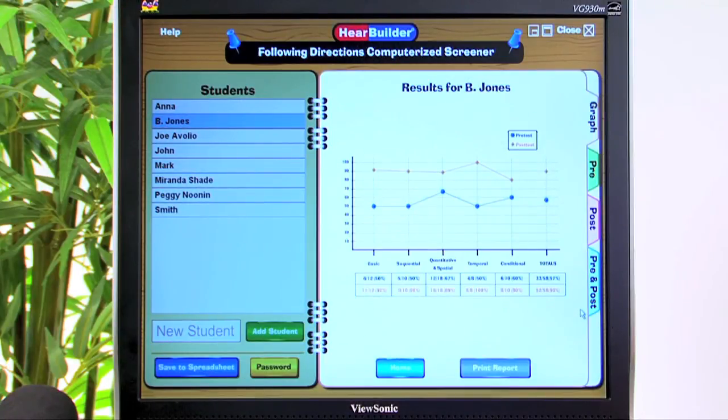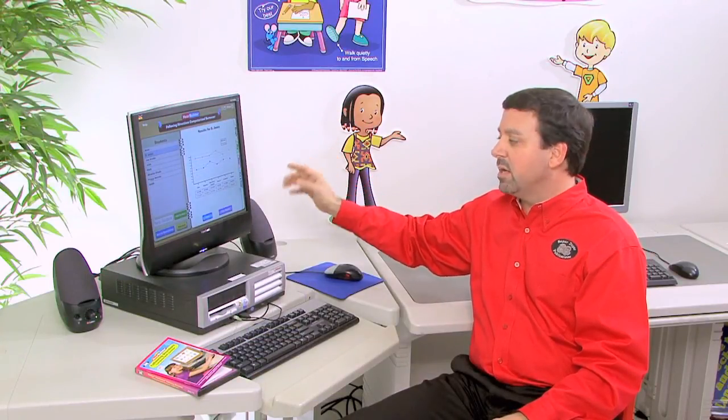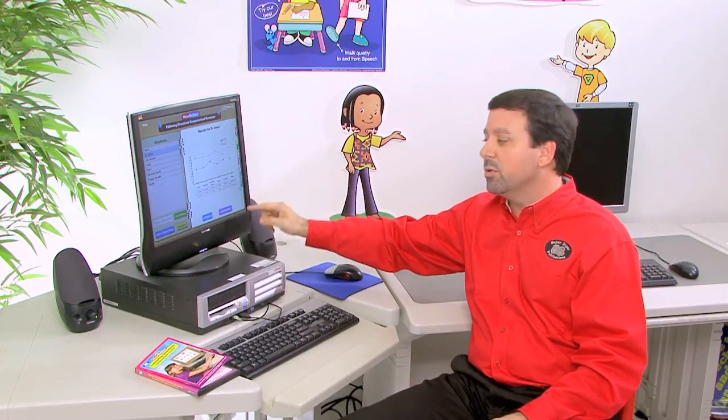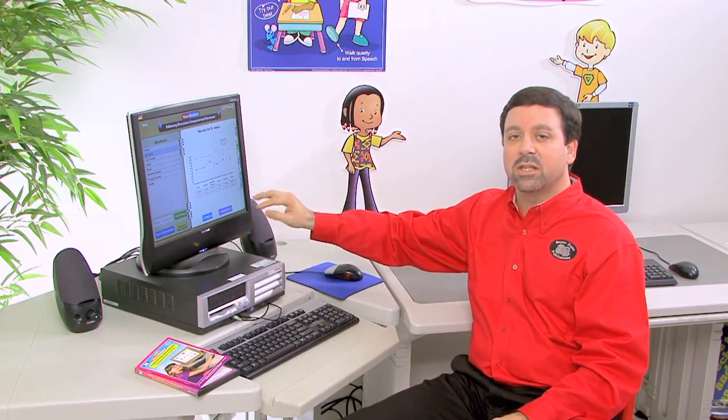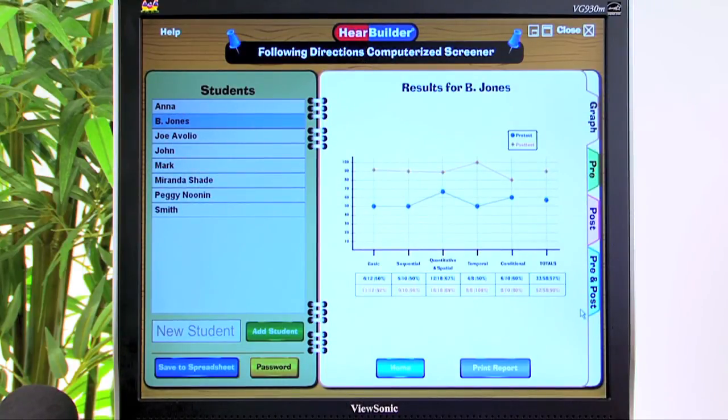To show the results, we simply click the Show the Results button, and this will provide us with a graph of each of our responses. Now you'll notice at the bottom, in blue, we have all of our percentages that are in a box form. The blue is going to indicate correct responses for the pretest, and the orange is going to indicate the correct responses from the posttest.